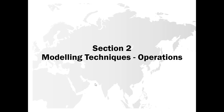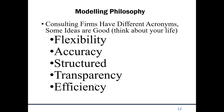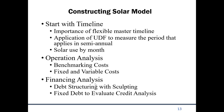Now I'm going to go through some modeling techniques and practice. There are some consulting firm rules called FAST - Flexible, Accurate, Structured, Transparent. I added Efficiency because I go crazy looking at horrible models. These things don't seem to mean much until you really get into it, and I'm going to have a major breakdown when I go through some of this.